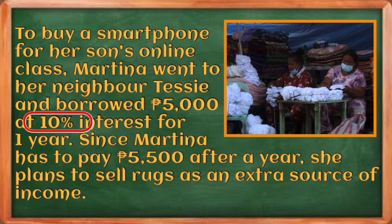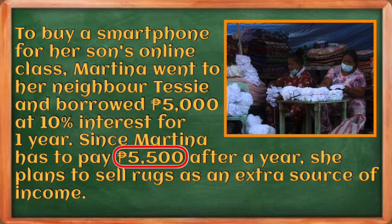The time or term is the number of units of time for which the money is borrowed and for which interest is calculated. Since Martina needs to pay the loan to Tessie in one year, the term is one year. The final amount, final value, or maturity value is the sum of principal and interest accumulated at a certain time. The final value in this example is five thousand five hundred pesos.